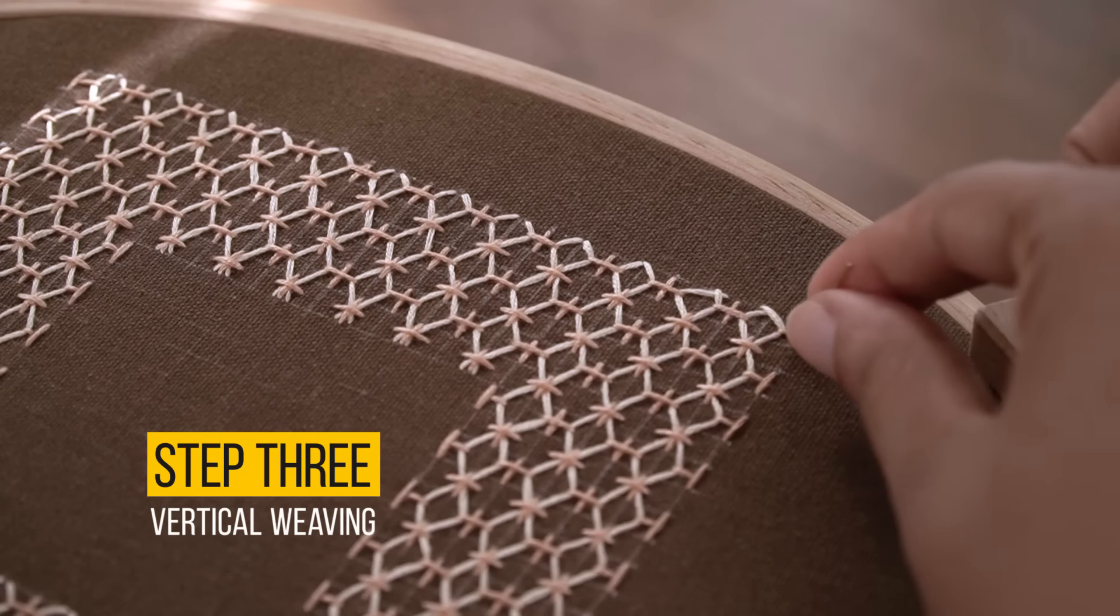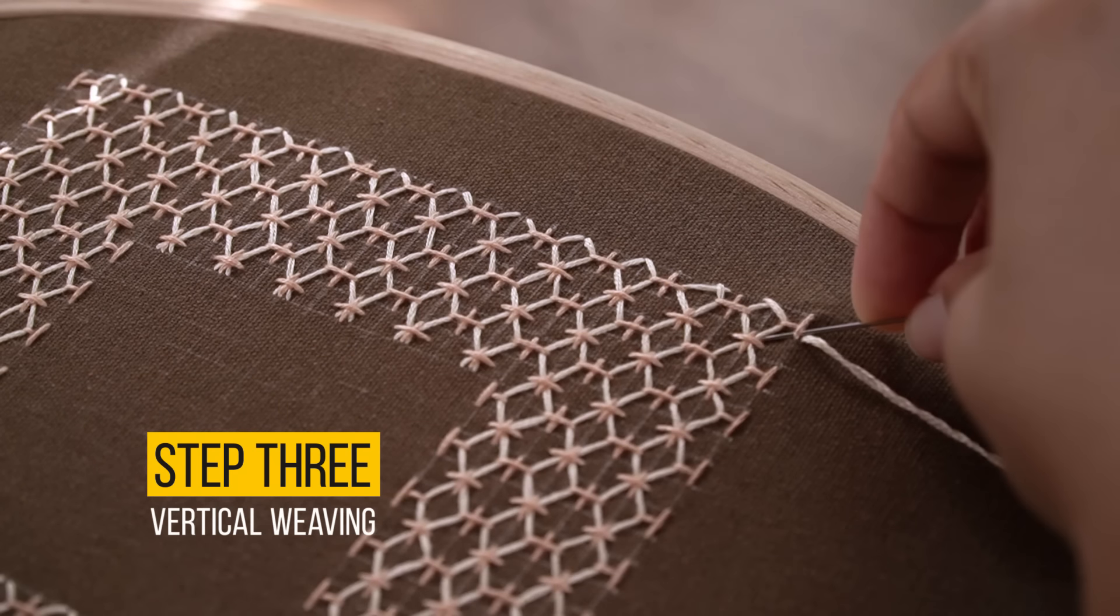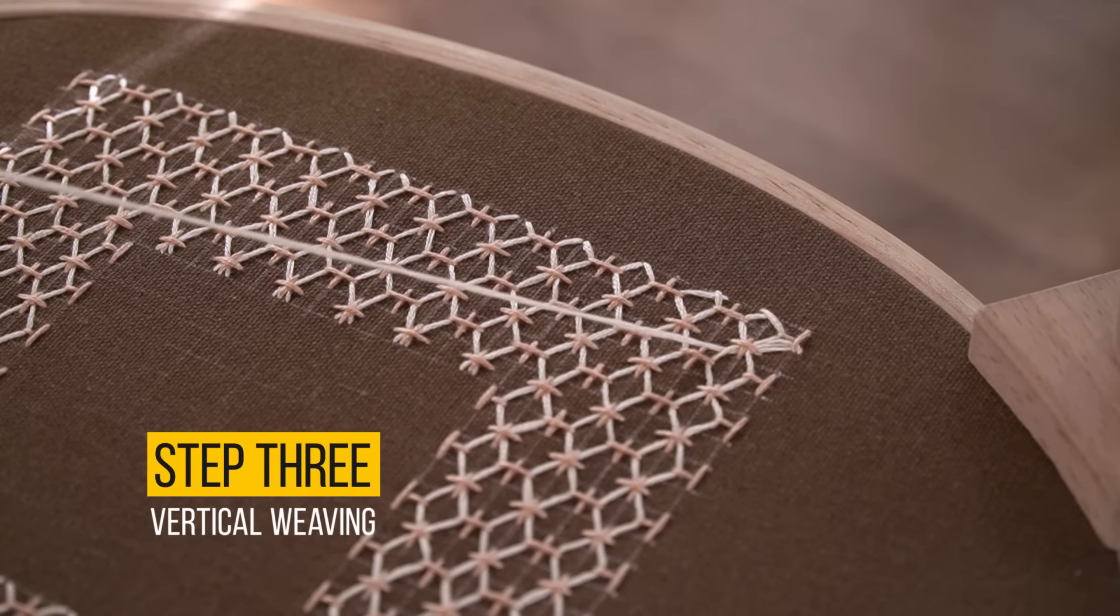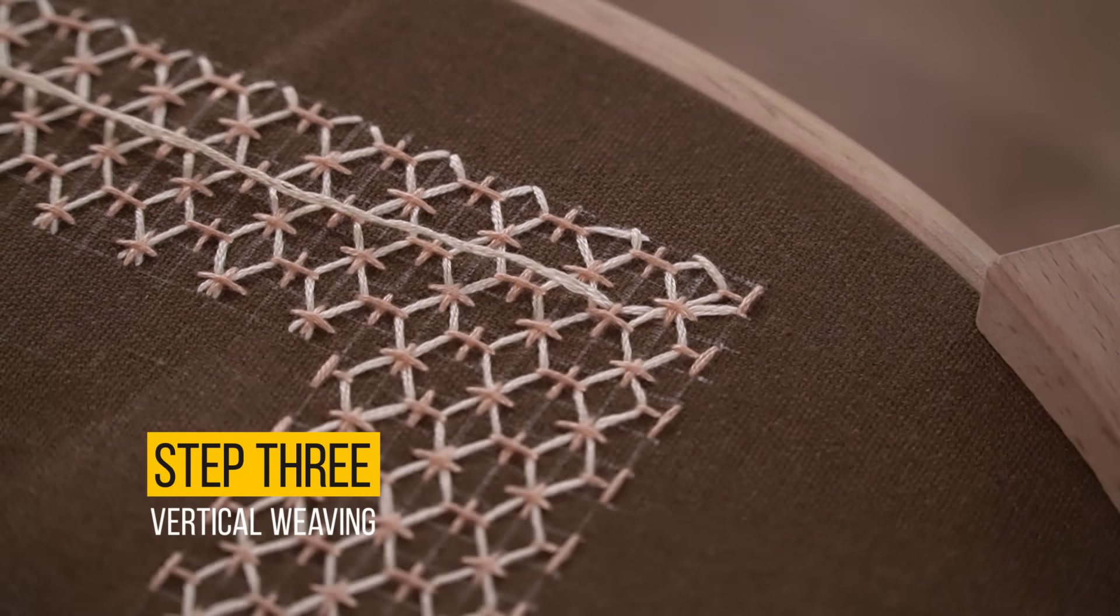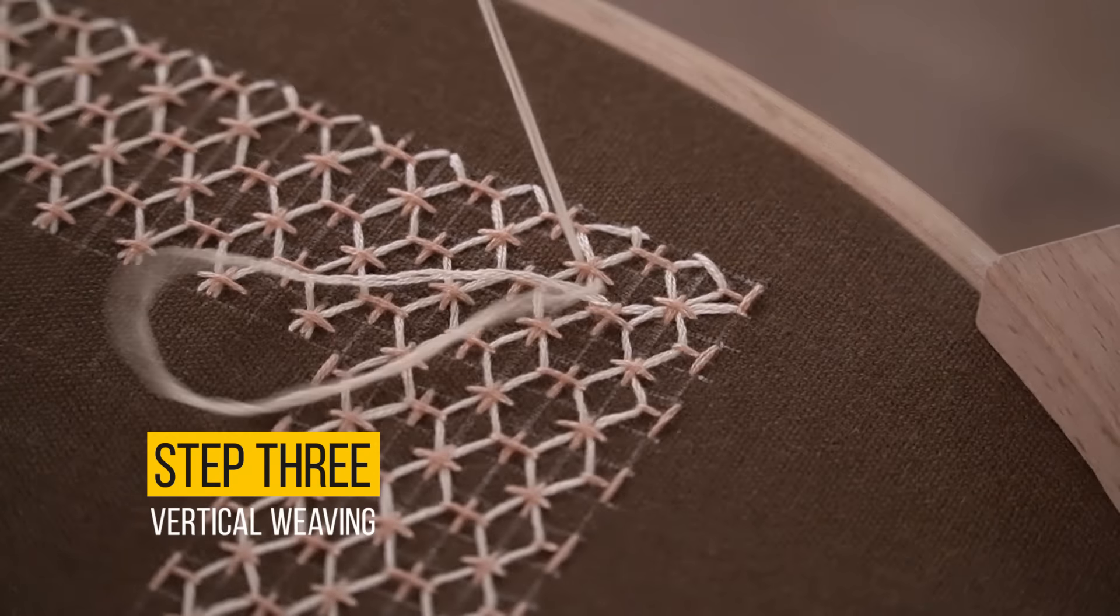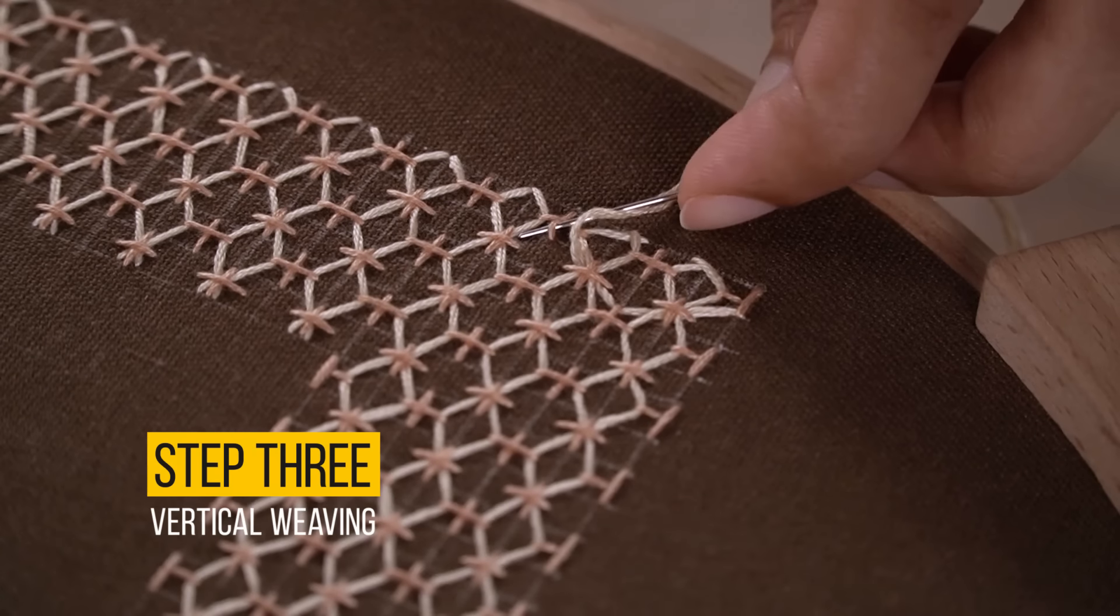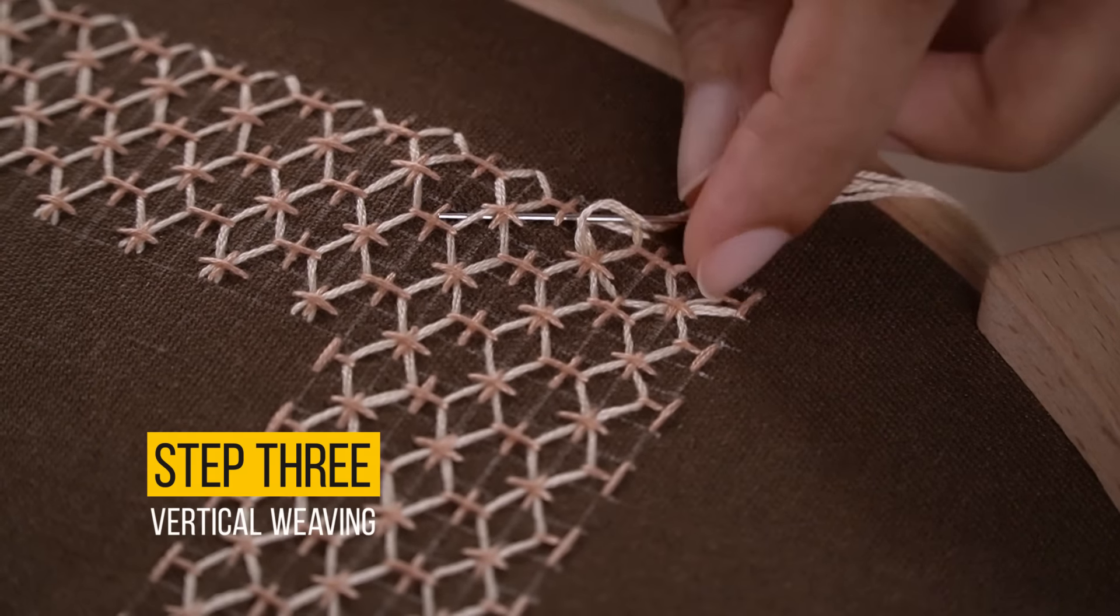Step 3: Vertical Weaving. I'll weave vertical lines to complete the formation of four petal flowers. It's like telling a story with each stitch. The vertical lines intertwine, bringing our blossoms to full life on the fabric.